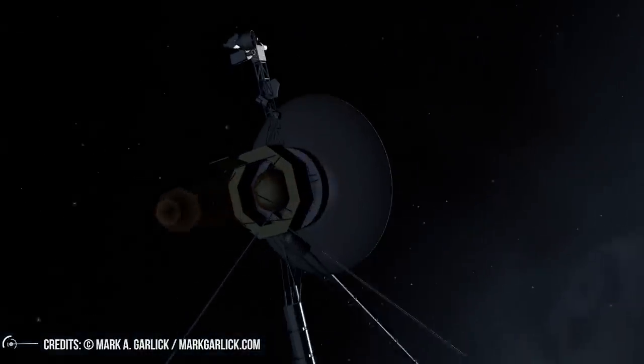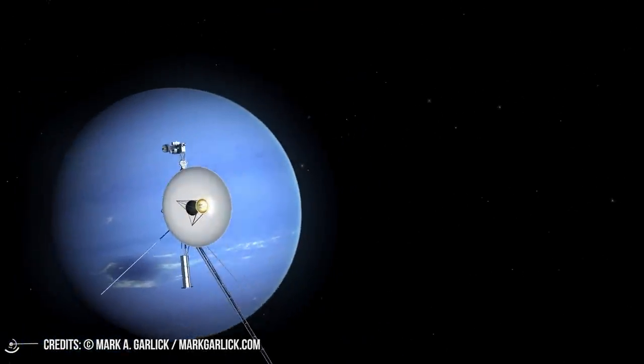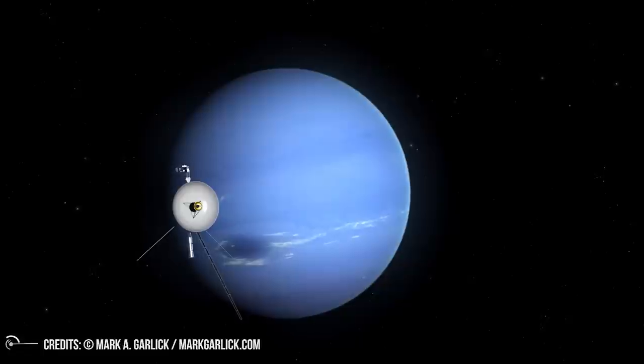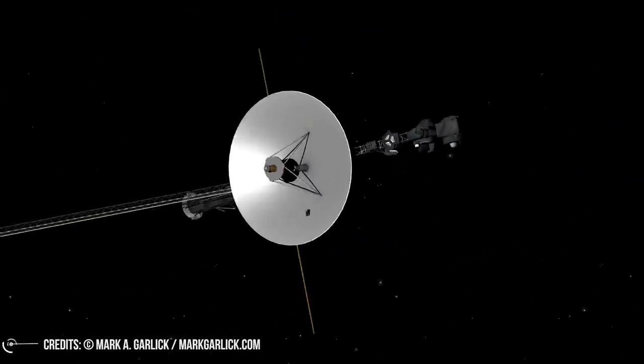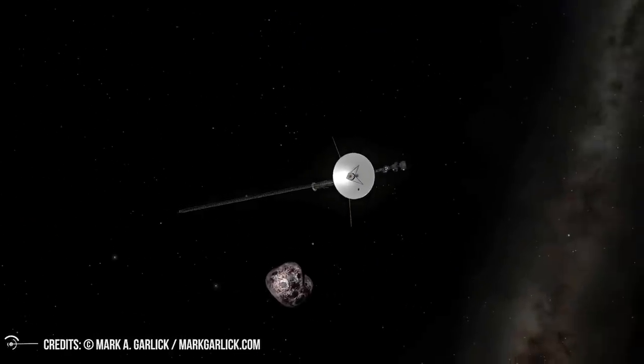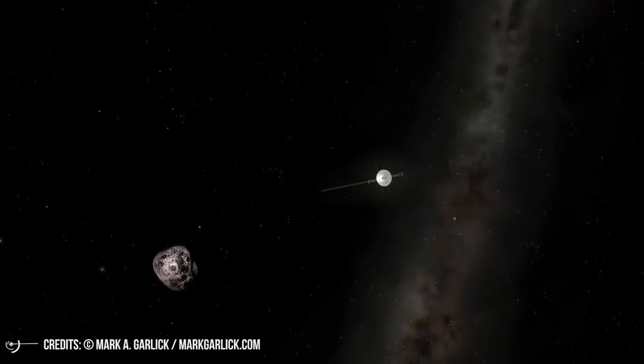Both spacecraft visited Jupiter and Saturn. Then the twins parted ways. Voyager 1 studied Saturn's moon, Titan, while Voyager 2 swung past Uranus and Neptune. In 2012, Voyager 1 passed through the heliopause that marks the edge of the Sun's solar wind and entered interstellar space. In 2018, Voyager 2 did so as well.